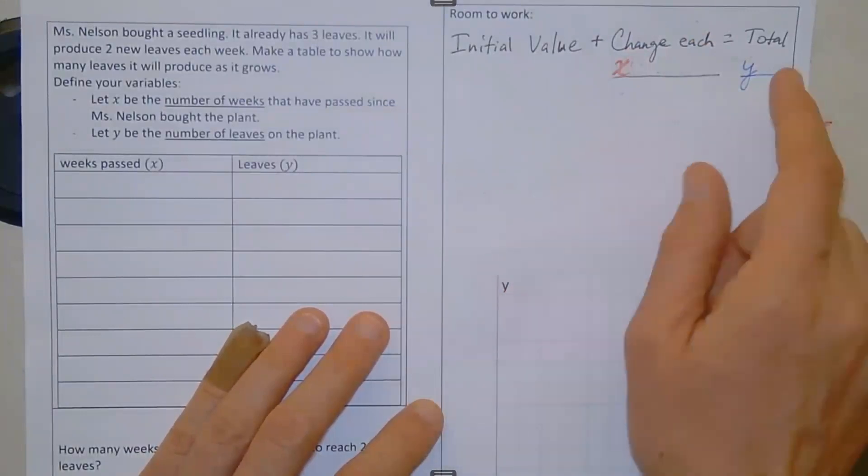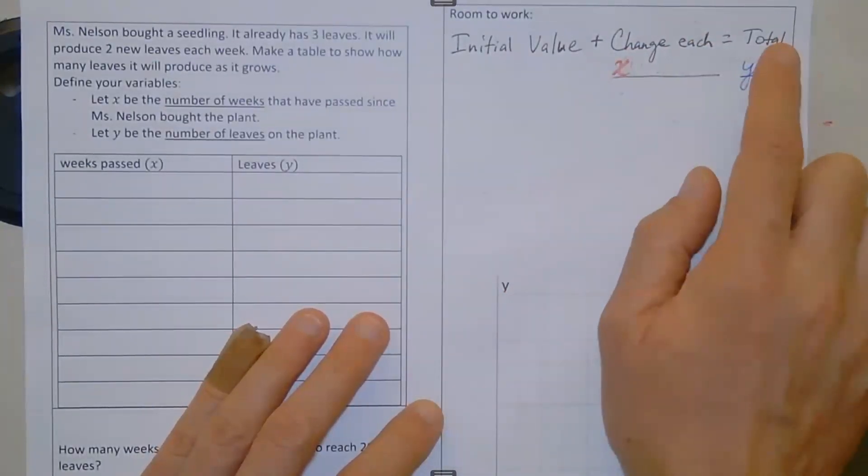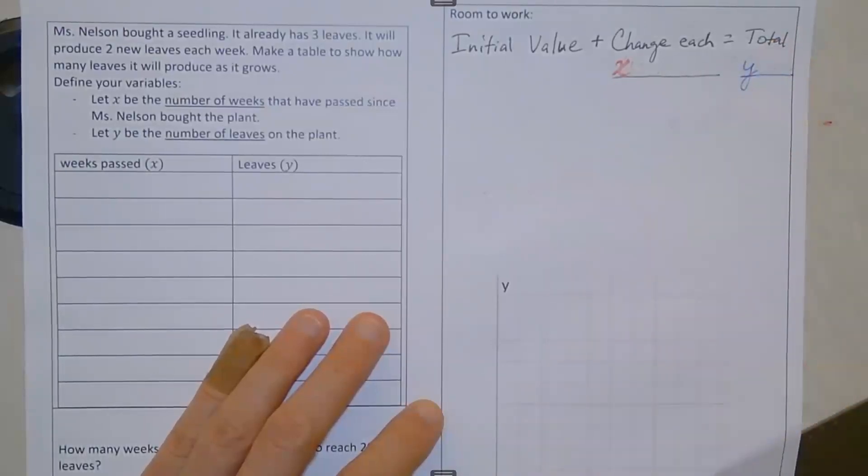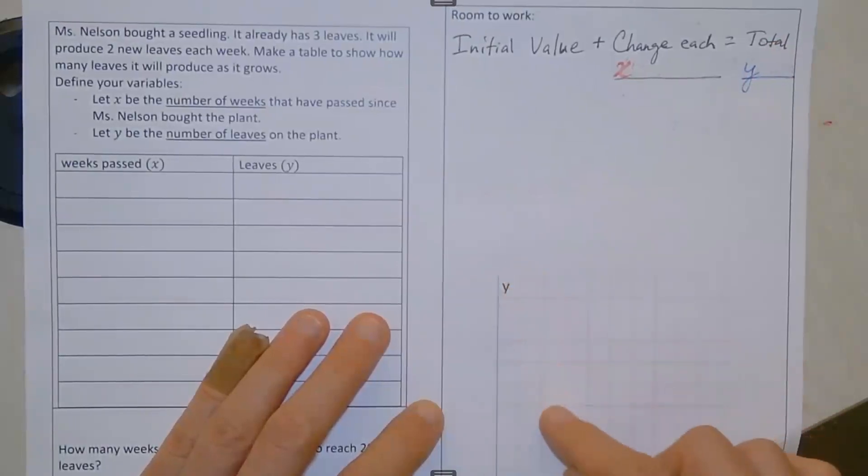And then that'll allow us to figure out what our total is for any given moment, for any given value of X. And that total is the Y value, how high or low our graph is at that given point.